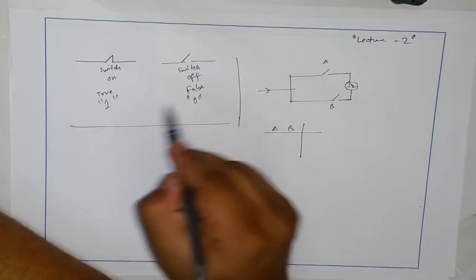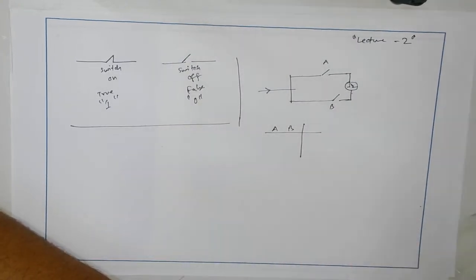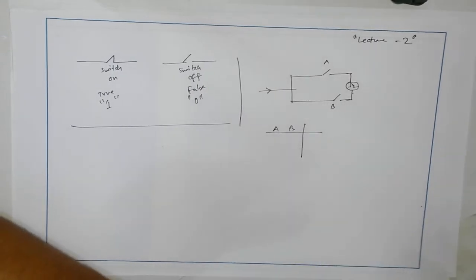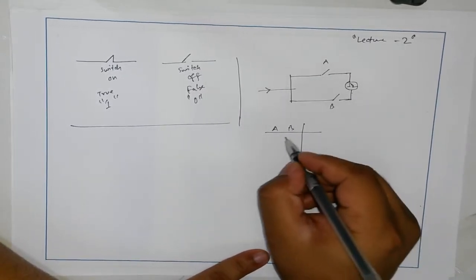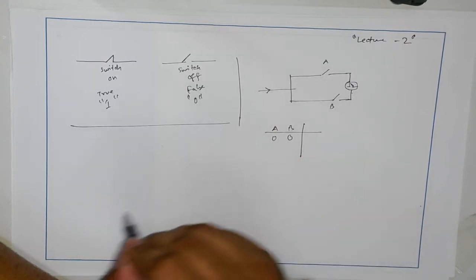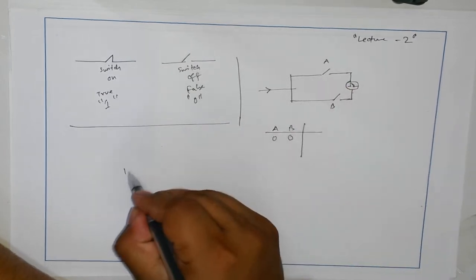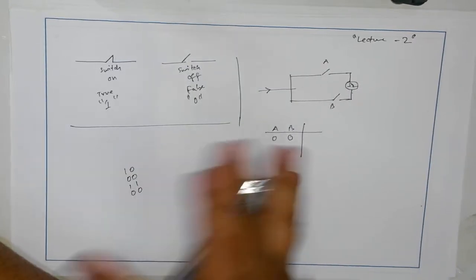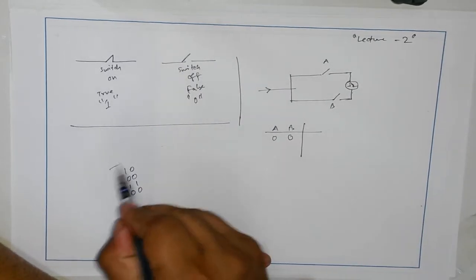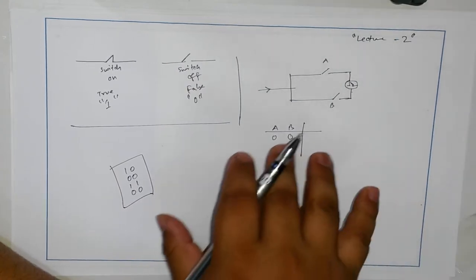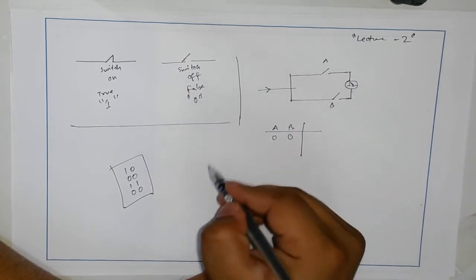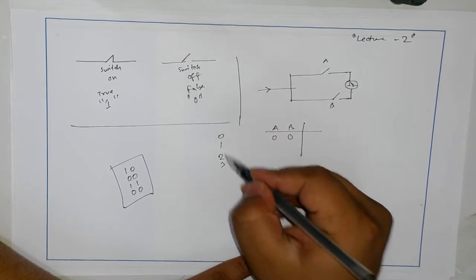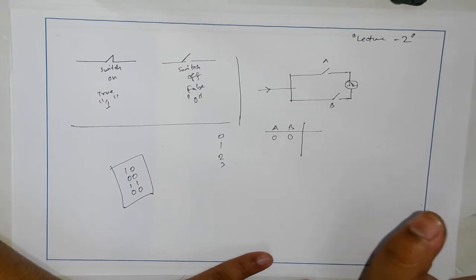So how do we write those combinations? Zero means false and one means true, switch on or switch off. We've discussed how to get on and off based on combinations. For two variables, the possible combinations are: zero-zero, one-zero, zero-one, and one-one — four combinations. You should always put them in binary form, going from zero up sequentially.